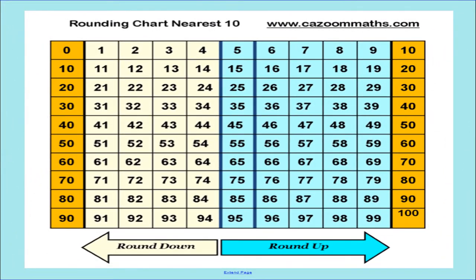Dear children, it takes a longer time to draw a number line and round the number each time, so we have to think about doing it with a shortcut. We can do that with the help of this rounding chart. Here we have numbers from zero to hundred. Let us see it carefully and try to understand how to round numbers easily. In the first row we have numbers from zero to ten, in the second row ten to twenty, in the third row twenty to thirty, and so on.